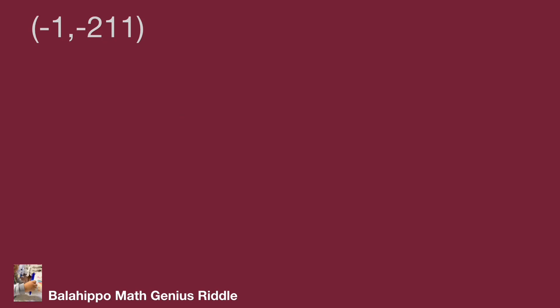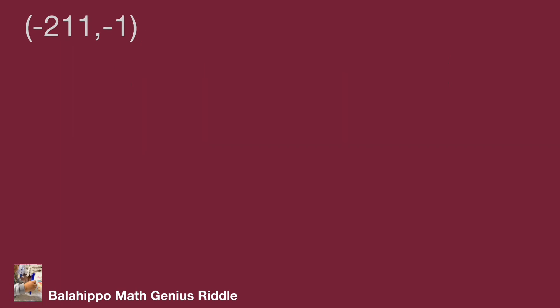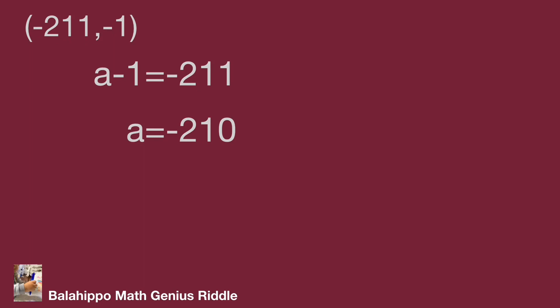Using the same process for the negative groups: when (−1, −211), we get a = 0 and b = −210. When (−211, −1), we get a = −210 and b = 0. So we have found all the values of a and b. Did you find it? Hope you enjoyed the video. Thank you.